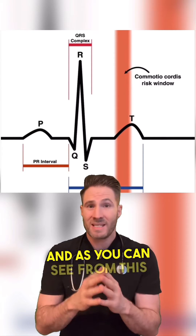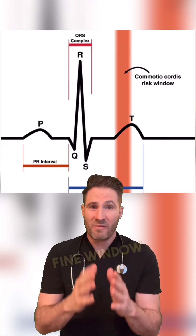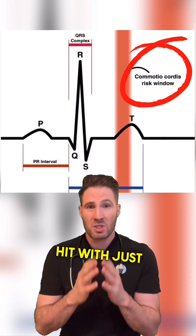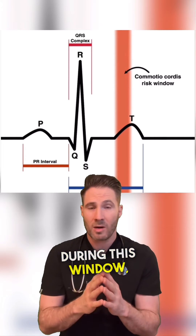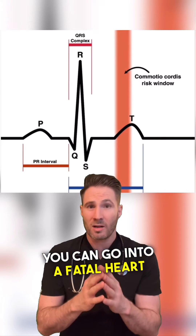This is where the electrical activity of your ventricles resets. And as you can see from this red line, there's a very fine window — if you're hit with just enough force during this window, you can go into a fatal heart arrhythmia.